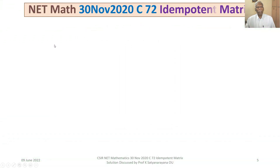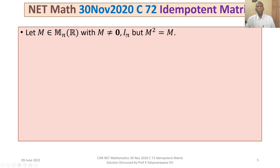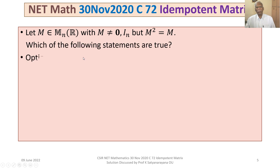The problem is: let M belong to M_n(ℝ), with M not equal to the zero matrix and not equal to the identity matrix, but M² = M. Which of the following statements are true? We are given four options.